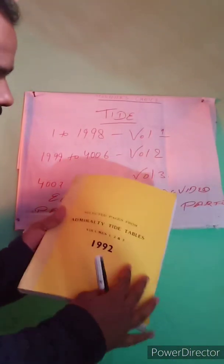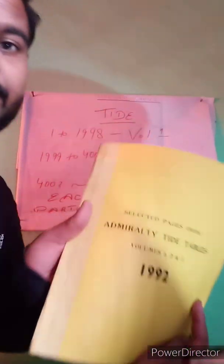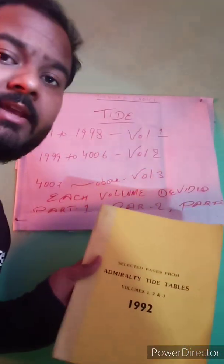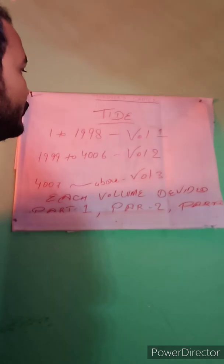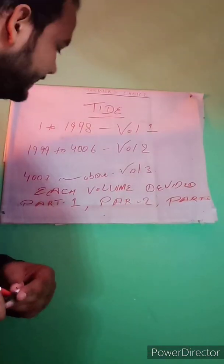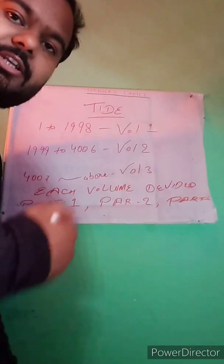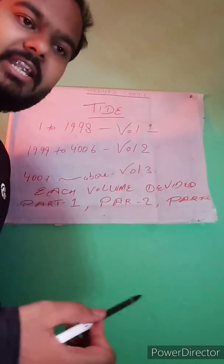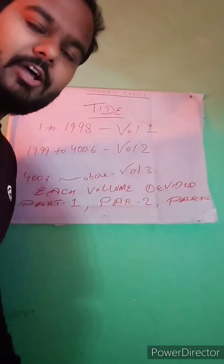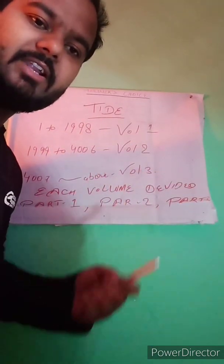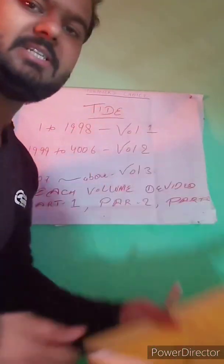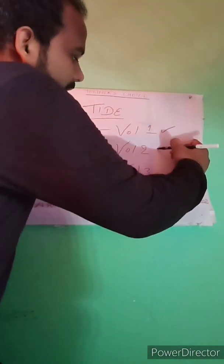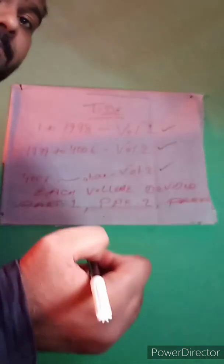This is our Admiralty Tide Table which they will provide in our examination. In the examination center they will provide this book, and with the help of this book you will use your predicted tide data. The first point is that in the exam question it will be given as Admiralty Tide Table number, for example number 112, and we need to find out the height of low water and high water at a certain time. The entire tide table is divided into three volumes: Volume 1, Volume 2, and Volume 3.